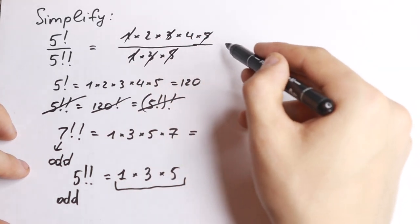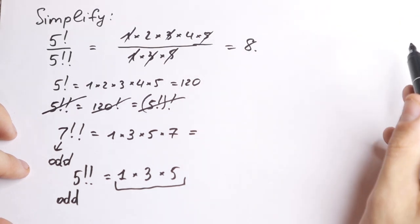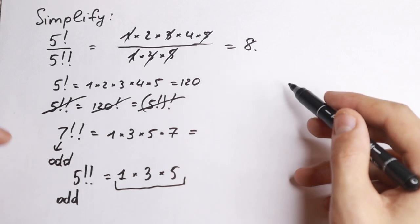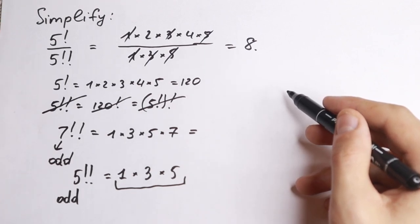Take a look. 1, 1, 3, 3, 5, 5. So the answer is 8. As you can see, real quick, the answer is 8. Just forget this approach because this is not correct. This is a double factorial problem.